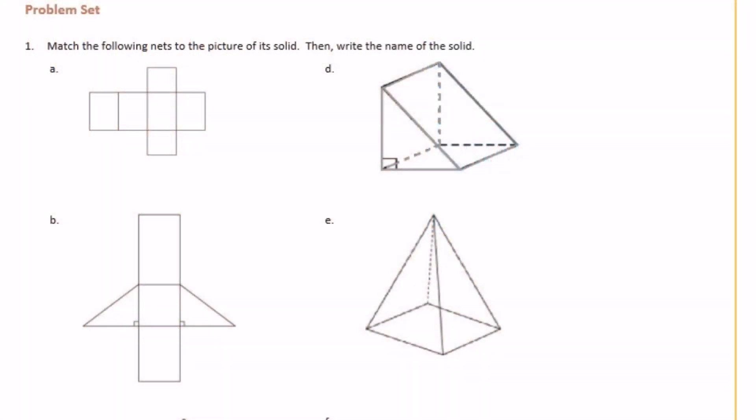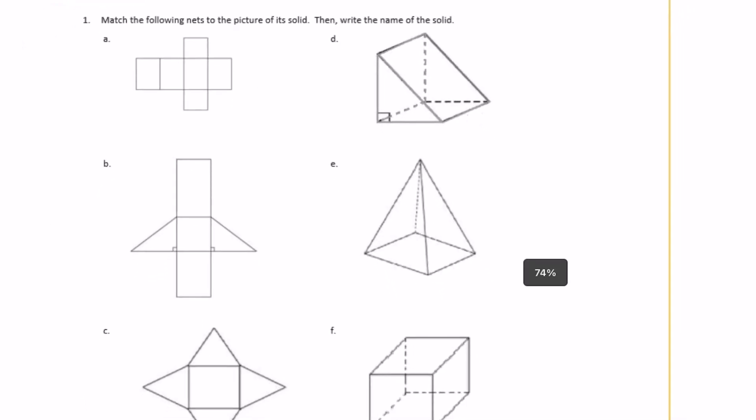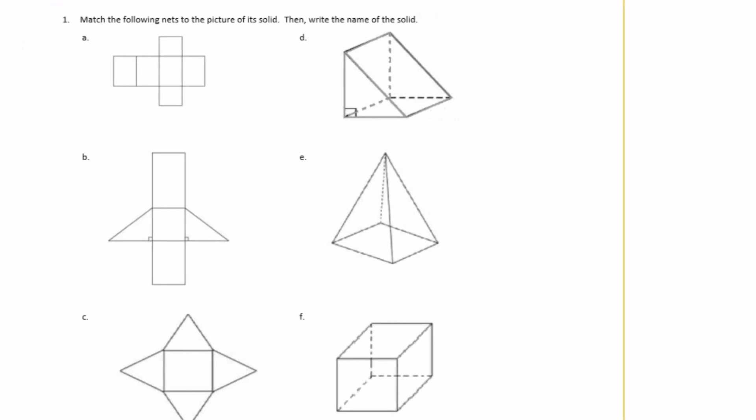Sixth grade, module 5, lesson 15, problem set. Number one: match the following nets to the picture of its solid, then write the name of the solid.